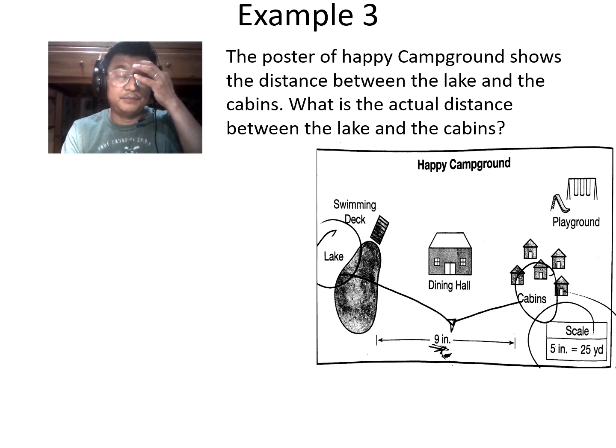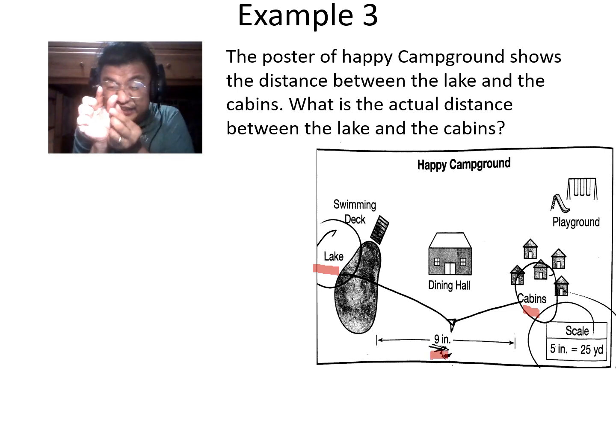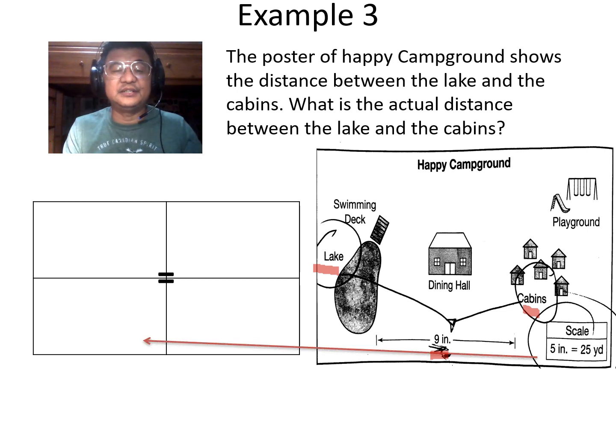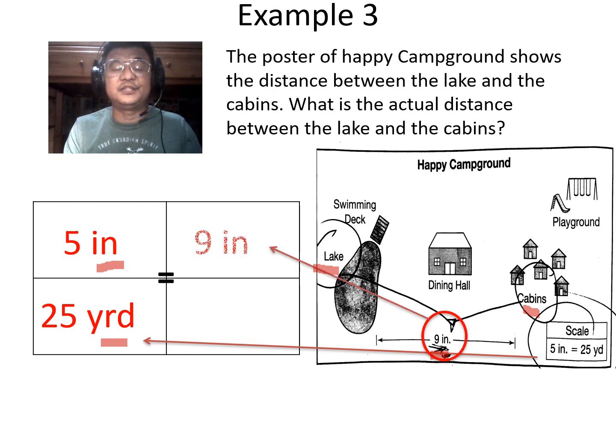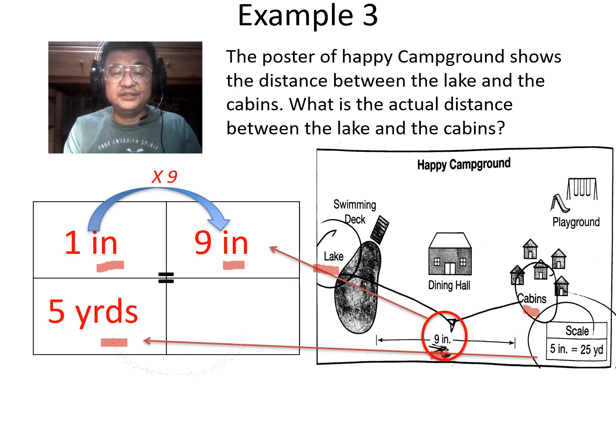All right, for the next problem, the poster of Happy Campground shows the distance between the lake and the cabins. What is the actual distance between the lake and the cabin? Check it out. This is the lake. This is the cabin. The real distance is what we want to know. But we only know 9 inches. Do you think it's just 9 inches like that? No. What is it in real life? Again, start with your given scale. The given scale is written there in the corner. Write down 5 inches represents 25 yards. Inches to yards. And what do I know? 9 inches. Therefore, 9 inches goes on top because it follows inches to inches and yards to yards. And the missing is the yards. We don't know how many yards. The pattern is times 9 on top.